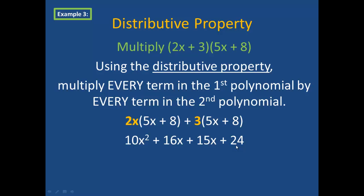You might notice that I actually have some like terms this time. So when you finish multiplying, you should always combine like terms when possible. 16x and 15x will combine to give me 31x. So my final simplified answer is 10x squared plus 31x plus 24.